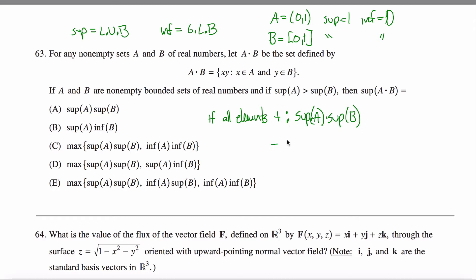If all elements are negative in both sets, then I don't want the supremum of each of them, right? If my set contains all the numbers from negative four to negative two, I don't want negative two. I want the negative four. So just in case they're negative,